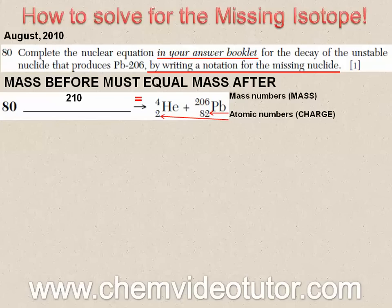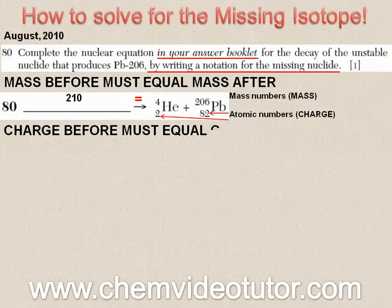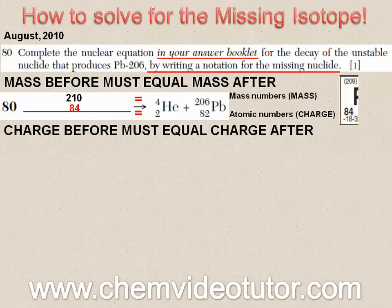Likewise, the charge before must equal the charge after, so that 2 plus 82 must equal 84 before the arrow. Finally, to find the missing symbol, simply look up atomic number 84 in the periodic table and you will find your answer.